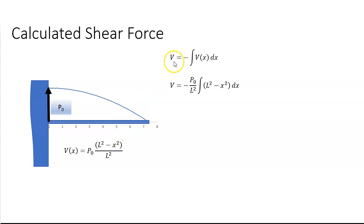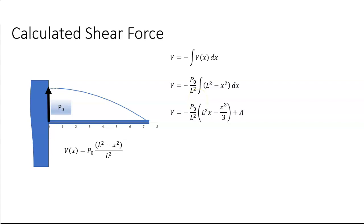The total shear force is the integral of that load. So integrating v(x) = (l² minus x²)/l², taking the constants out, we get l²x minus x³/3 plus a constant A. At the free end, when x equals l, the shear is zero.